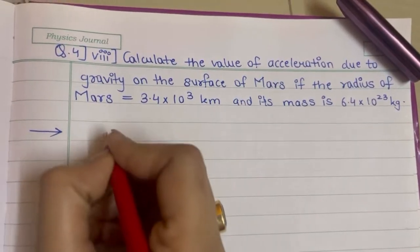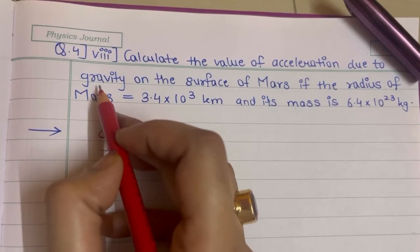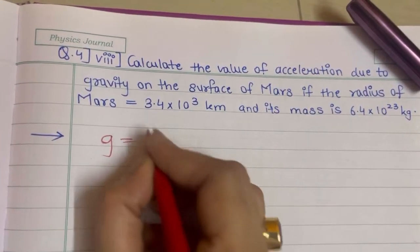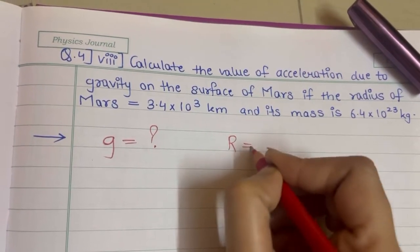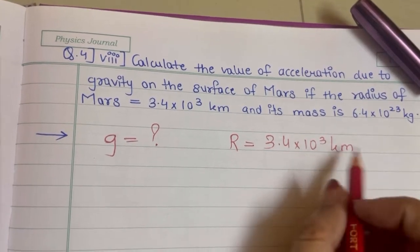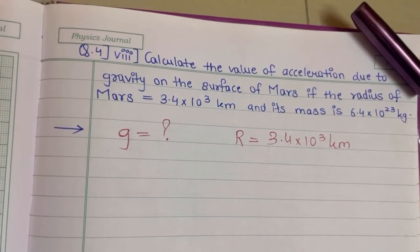Calculate the value of acceleration due to gravity, g, on the surface of Mars. The radius of Mars is 3.4 × 10³ km and its mass is 6.4 × 10²³ kg.